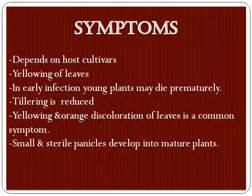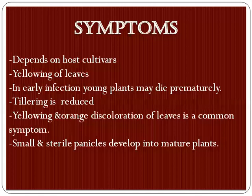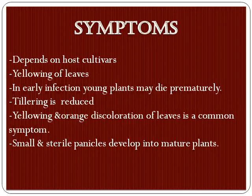The symptoms of Tungro disease depend on host cultivars. Yellowing of leaves is one of the important characteristics. In early infection, seedlings may die prematurely. Another symptom is that tillering is reduced in the field. Yellowing or orange discoloration of leaves is a very common symptom. Small and sterile plants develop into mature plants.